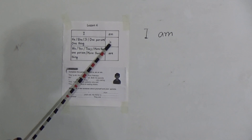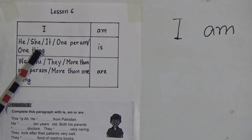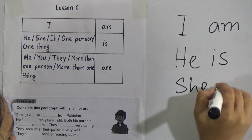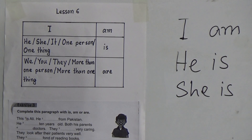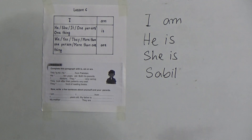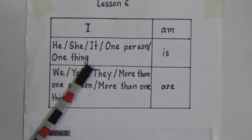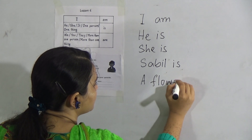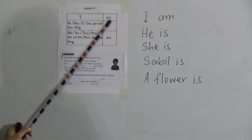We use 'is' after 'he', 'she', 'it', or one person or one thing. So it will be: he is, she is, it is. Or for one person — suppose there is a boy named Sabin — so we write: Sabin is. And for one thing, if we say 'a flower', that is one flower, so it will be: a flower is. Remember: we use 'am' after 'I', and 'is' after he, she, it, one person, or one thing.